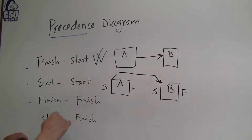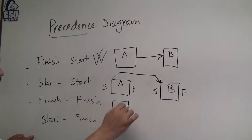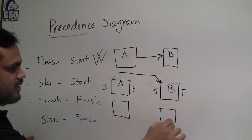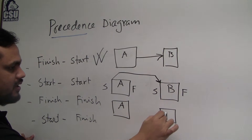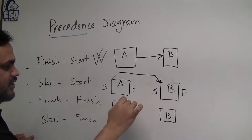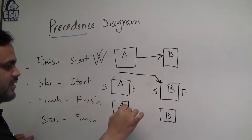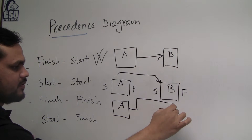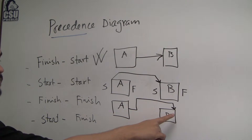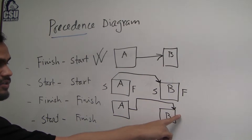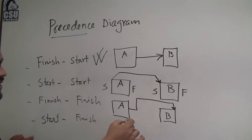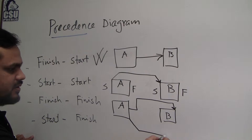Then finish-to-finish: activity A, activity B, finish-to-finish. B can finish when A finishes. There are different ways to represent this on the diagram — you can draw the arrow from the finish side of A to the finish side of B.